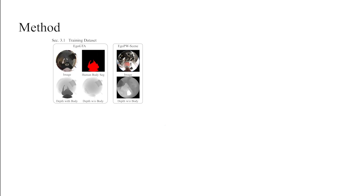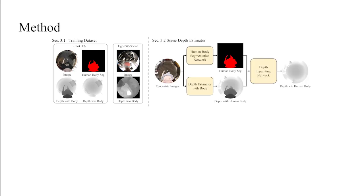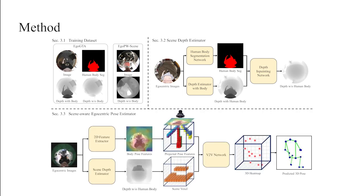Here we show an overview of our approach. We first propose a new synthetic dataset called EagleGTA and an in-the-wild dataset called EaglePWScene that provides ground-truth scene context under the egocentric setting. Next, we train a depth estimator to estimate the geometry of the surrounding scene and introduce a depth inpainting network that estimates the depth behind the human body. Finally, we combine 2D features and scene geometry in a common voxel space and predict the egocentric pose with a V2V network.